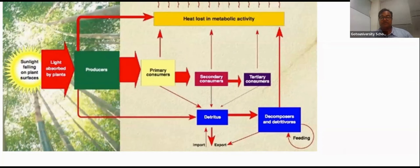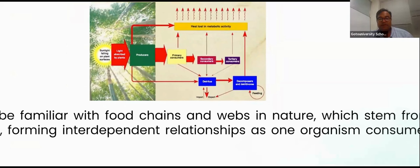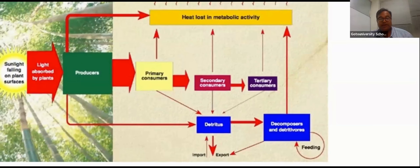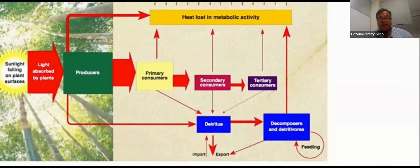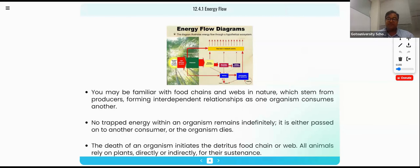The primary consumer, secondary consumer, and tertiary consumer all lose heat by metabolism. There is a reason why we are using the 10% energy gain law — we know very well the 10% energy gain law.